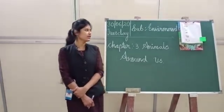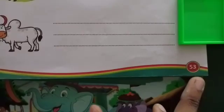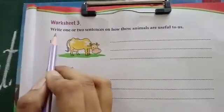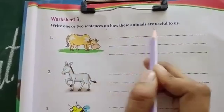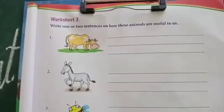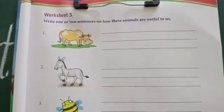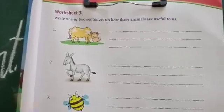So all of you take your Xbook, page number 53. Worksheet 3: Write 1 or 2 sentences on how these animals are useful to us. Here we have to write 1 or 2 sentences on how these animals are useful to us.